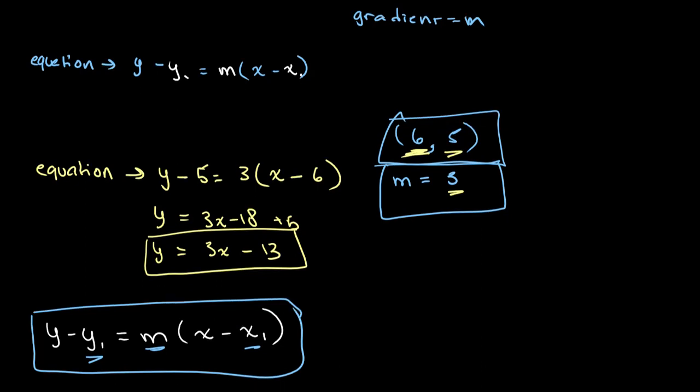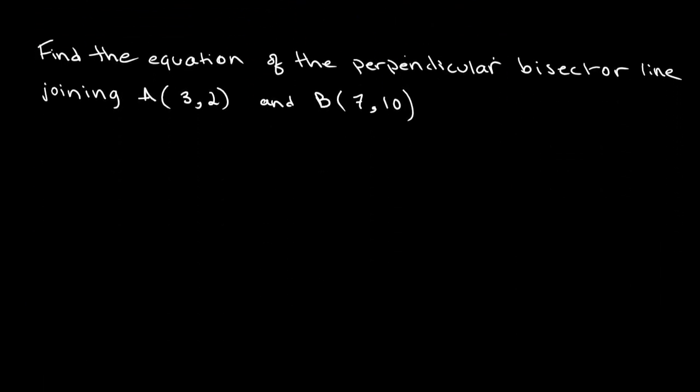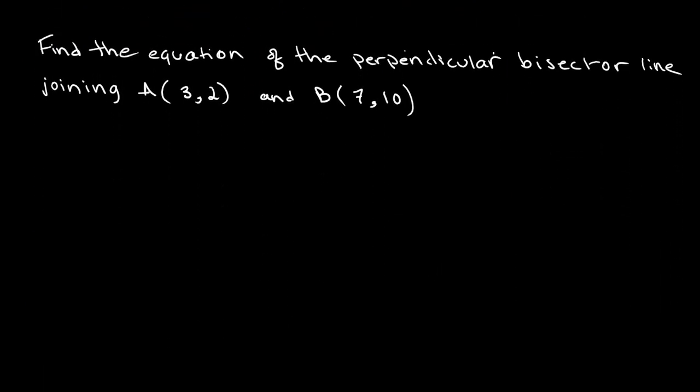Now let's look at an example in which we have to use this equation. So we have a question that says, find the equation of the perpendicular bisector of the line joining A(3, 2) and B(7, 10).